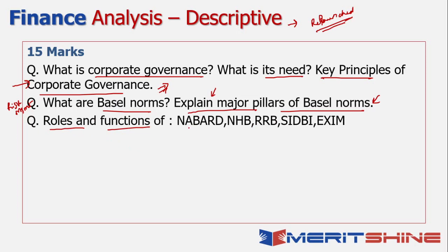The second 15-mark question was on Basel norms — explaining the major pillars. This was from a risk management standpoint and was a fairly straightforward question, completely discussed in one of our earlier YouTube sessions where the complete answer framework was provided. The third 15-mark question asked about the roles and functions of NABARD, along with other financial institutions — NABARD, NHB, Regional Rural Banks, SIDBI, and EXIM — all of which are covered quite extensively in the financial systems sessions. All you had to do was write approximately three marks' worth on each.